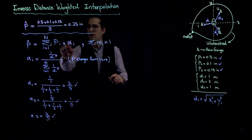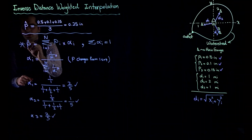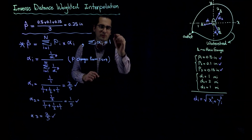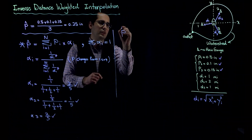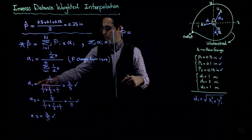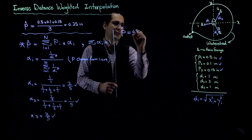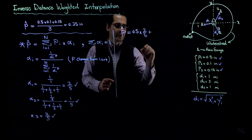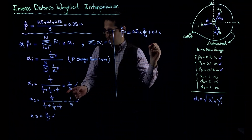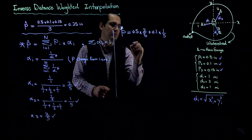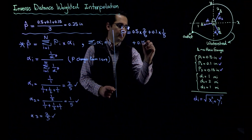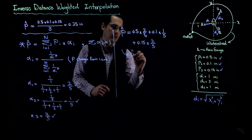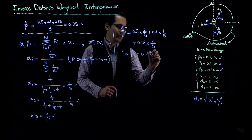Now I put the alphas into the equation to estimate the amount of precipitation at my house. The estimated rainfall equals P1 times alpha one: 0.5 inches times two over five, plus P2 times alpha two: 0.1 times one over five, plus P3 times alpha three: 0.15 times two over five. Calculating this gives an estimated rainfall of 0.28 inches.